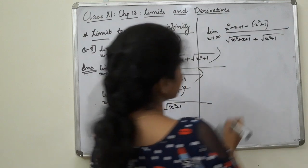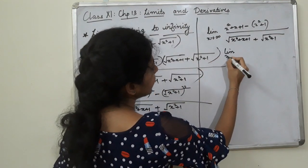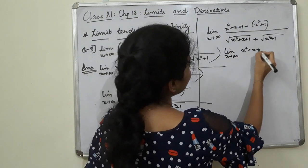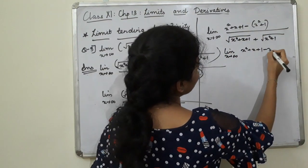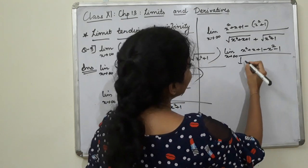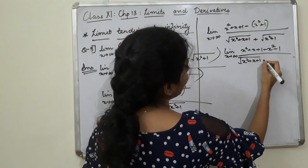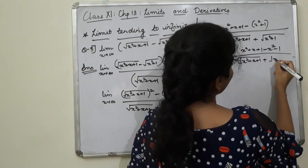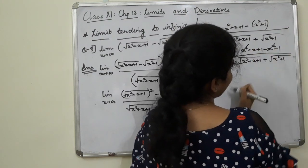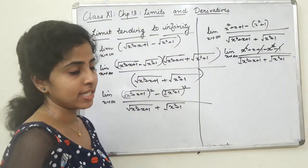Inside the limit, extending to infinity: x squared plus x plus 1 minus x squared minus 1, divided by root of x squared plus x plus 1 plus root of x squared plus 1. Here x squared cancels, leaving x.